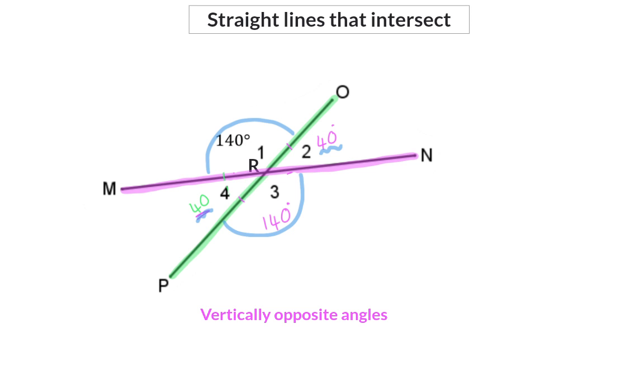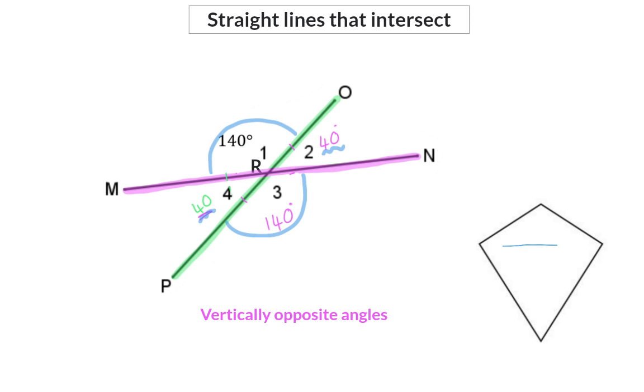Note the small difference between opposite angles in a polygon, and vertically opposite angles. Vertically opposite angles touch each other, and have a common point.